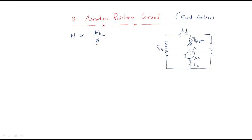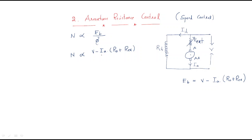The back EMF is generated in the armature. The formula for back EMF is: Eb = V minus the armature drop plus external drop. The external resistance is the series resistance added. So finally, speed is proportional to (V minus Ia × (Ra + R_external)) divided by flux. Since we are using only armature control, the flux is kept constant.